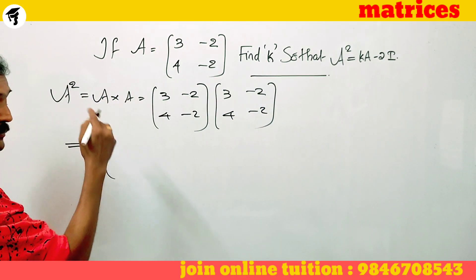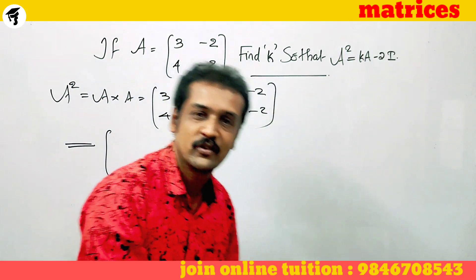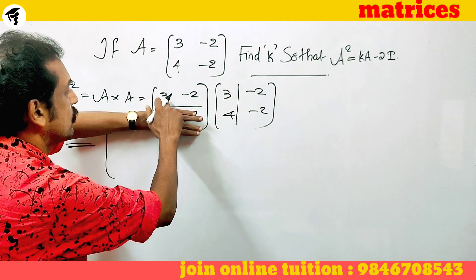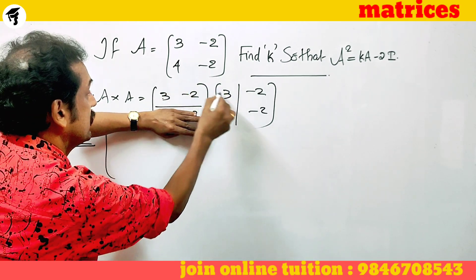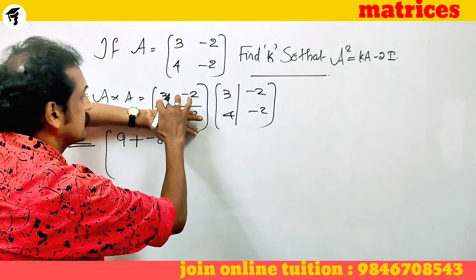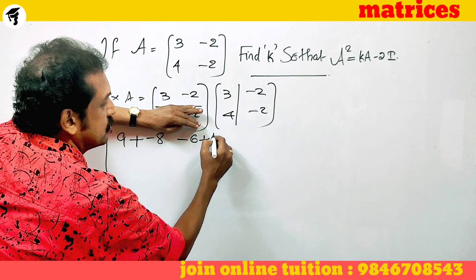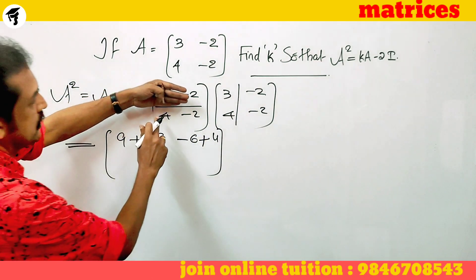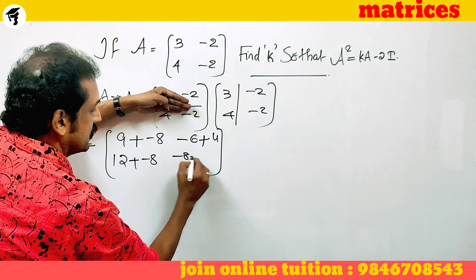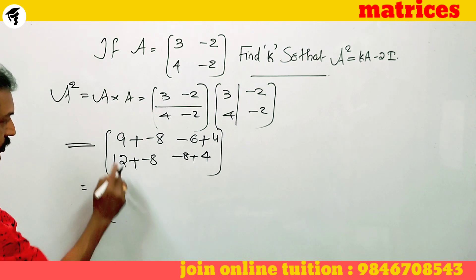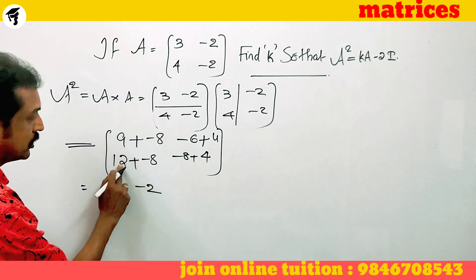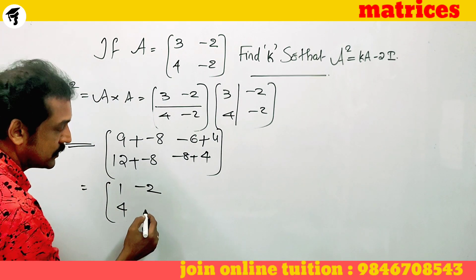To multiply, we go row-wise into column-wise. The first element: first row into first column — 3 into 3 is 9, plus minus 2 into 4 is minus 8. First row into second column — 3 into minus 2 is minus 6, plus minus 2 into minus 2 is plus 4. Next row: 4 into 3 is 12, plus minus 2 into 4 is minus 8. Then 4 into minus 2 is minus 8, plus minus 2 into minus 2 is plus 4. So the elements are: 9 minus 8 equals 1, minus 6 plus 4 equals minus 2, 12 minus 8 equals 4, minus 8 plus 4 equals minus 4.